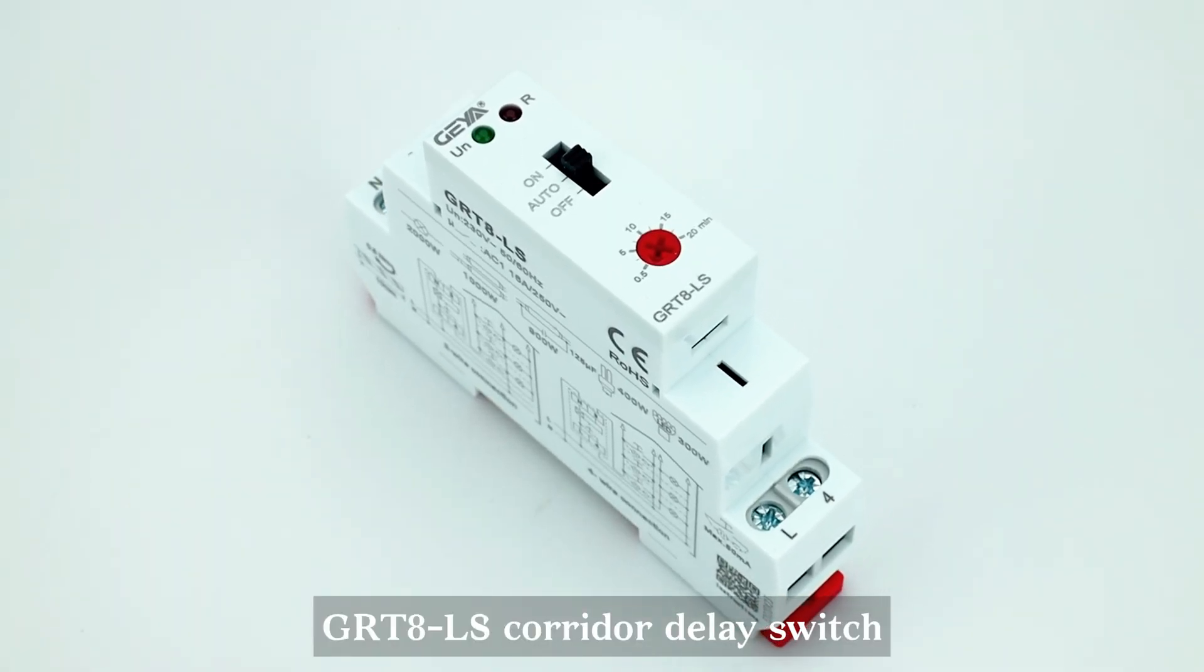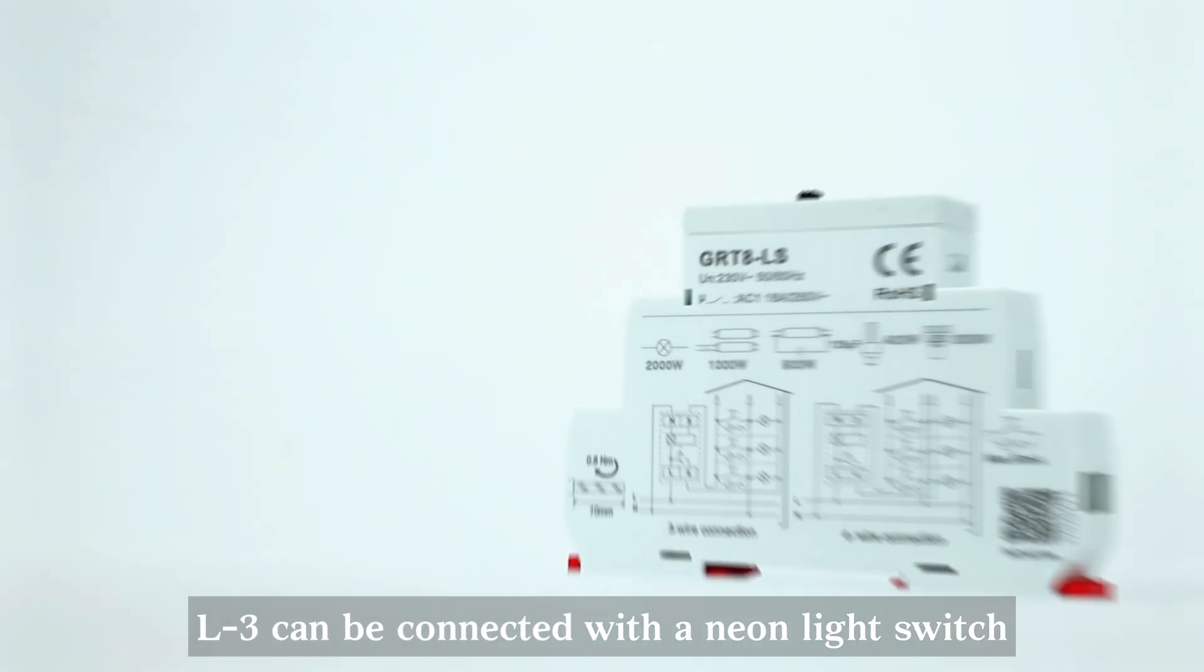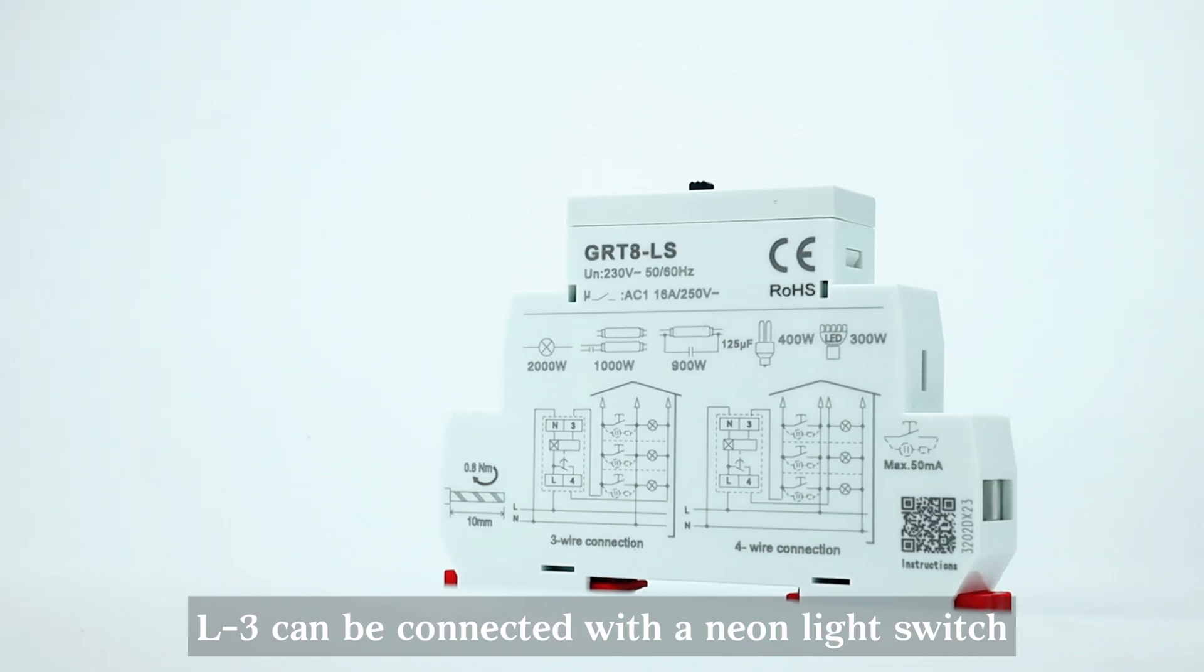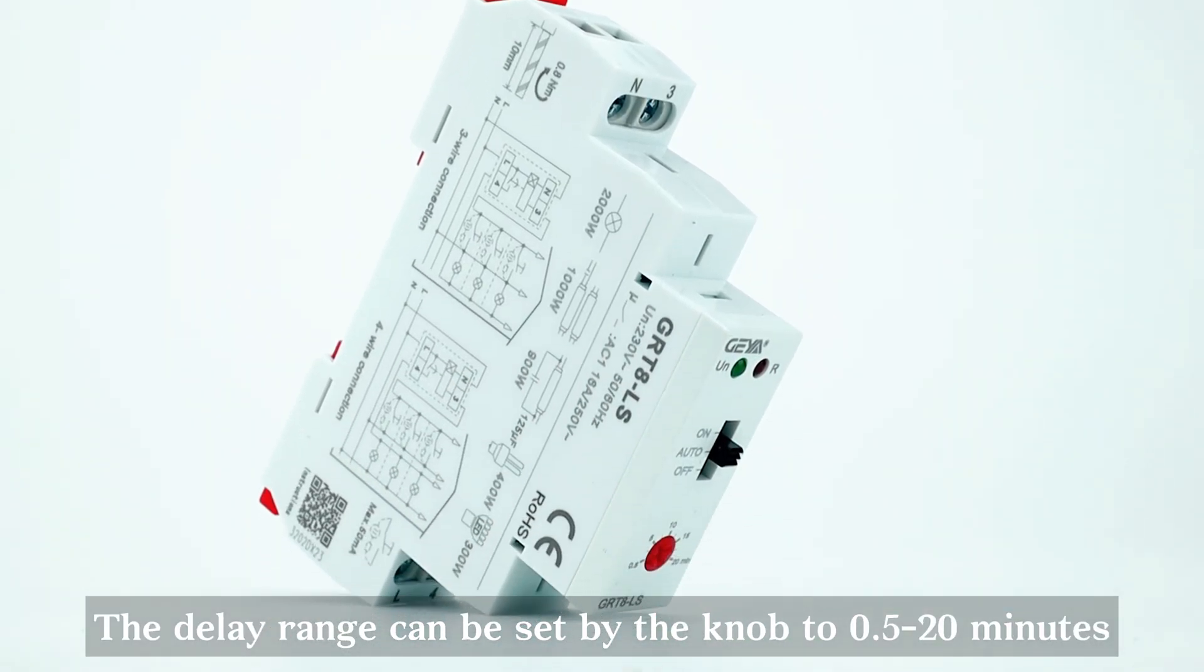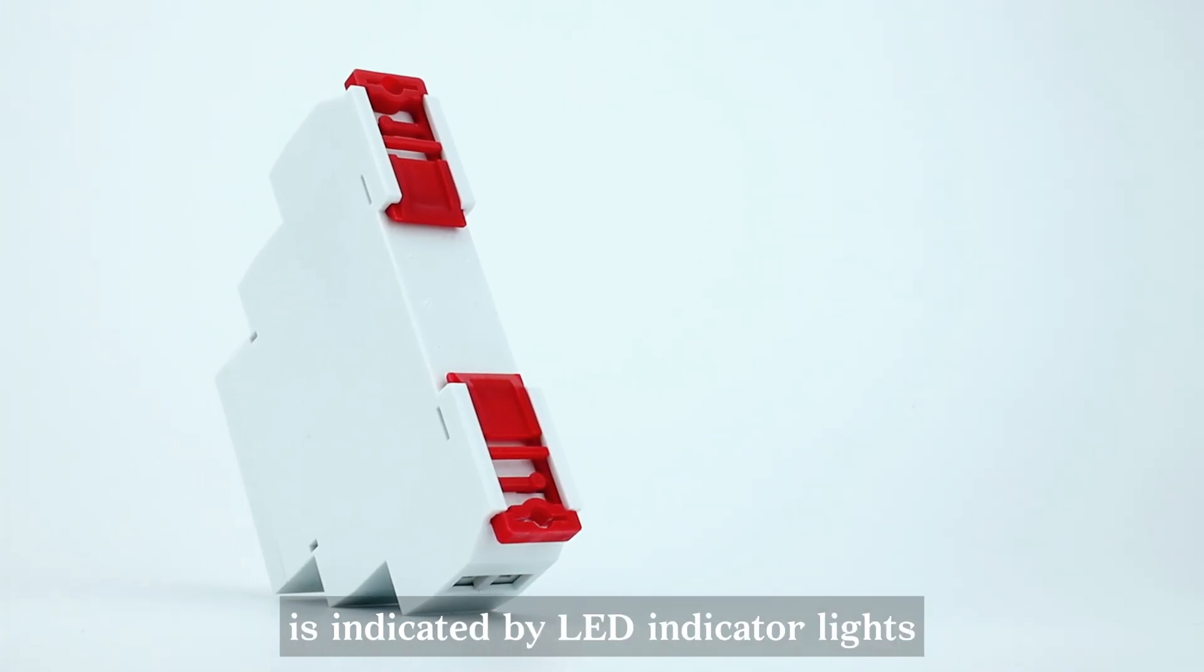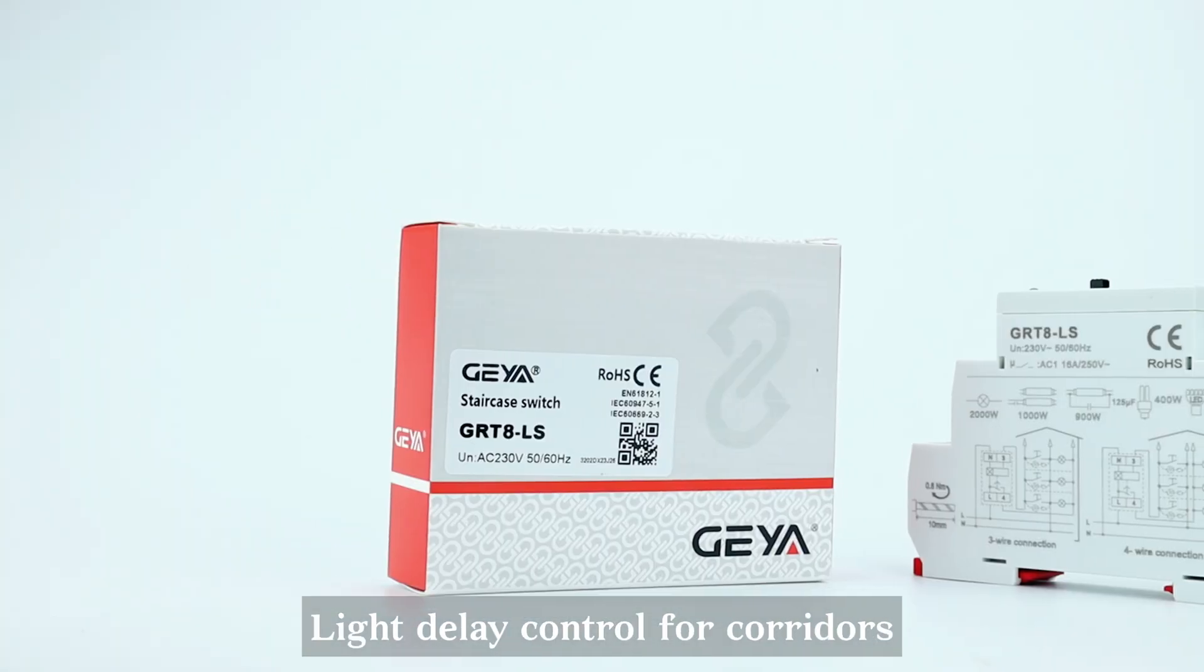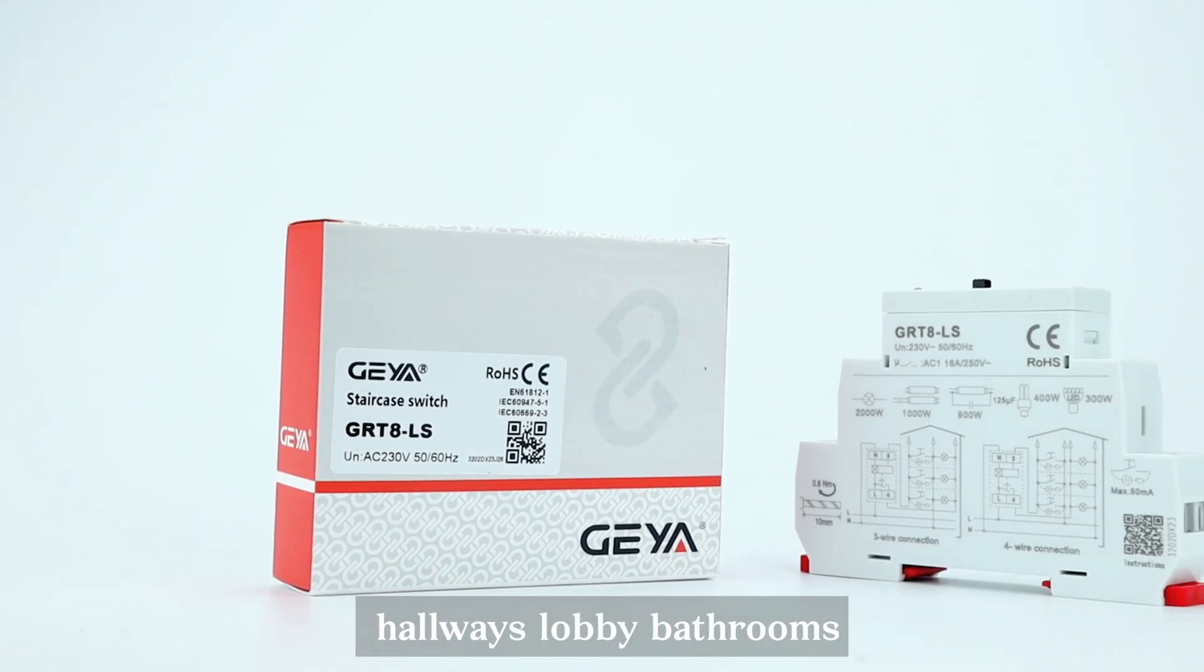The GRT8 LS Corridor Delay Switch has three working modes. L3 can be connected with a neon light switch. The delay range can be set by the knob to 0.5 to 20 minutes. The working status of the relay is indicated by LED indicator lights. Light delay control for corridors, hallways, lobbies, and bathrooms.